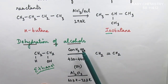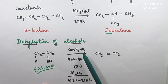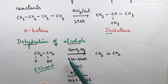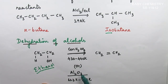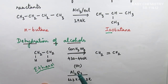The dehydrating agent used is concentrated H2SO4 at a temperature of 430 to 450 degrees. Another inorganic reagent is Al2O3, which is also a good dehydrating agent. The temperature range for Al2O3 is 623 K to 723 K.